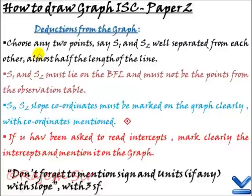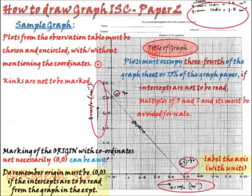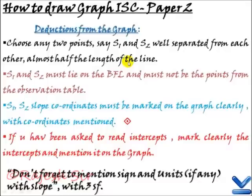Now, if you are supposed to read the slope, choose any two points, S1 and S2, well separated from each other and this separation must almost be half of the length of the line. Now, that is to be there, half of the length of the line. S1 and S2 must lie on the best fit line and must not be the points of observation table. They must not be the point of observation table. I would like you to take care. They must not be the point of observation table.